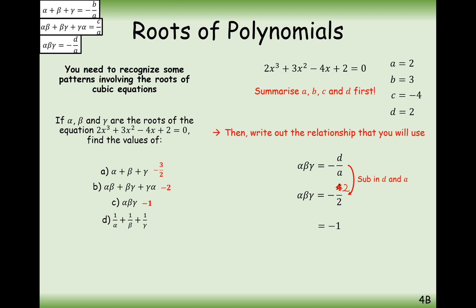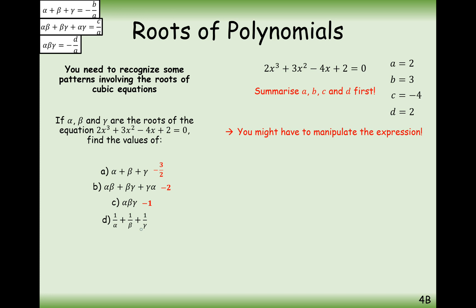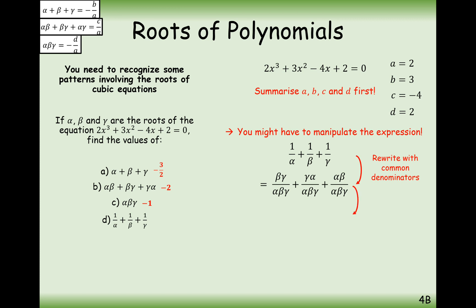Part (d), 1/α + 1/β + 1/γ, is trickier since we don't have a direct formula. We create a common denominator: the numerator becomes αβ + βγ + γα (the sum of doubles), and the denominator becomes αβγ (the triple). We have a formula for both. So it's (−2) ÷ (−1) = 2. The answer is 2.